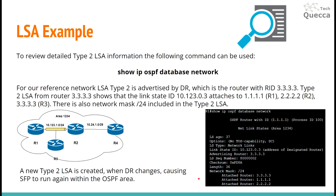A new Type 2 LSA is created when the designated router changes, causing SPF to run again within the OSPF area. Let's see this information in the example.